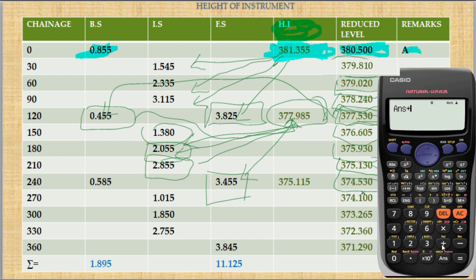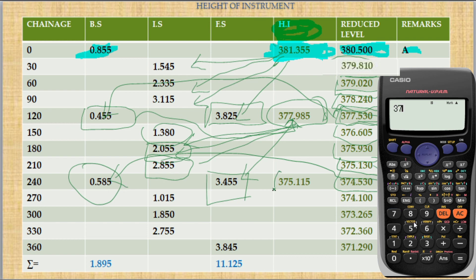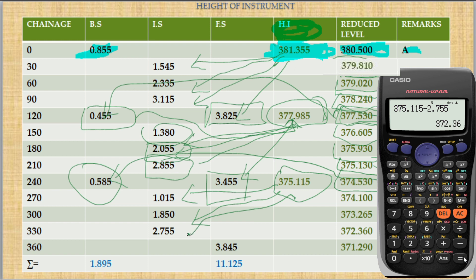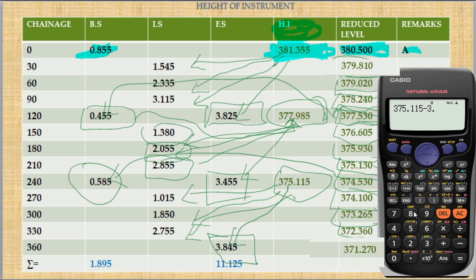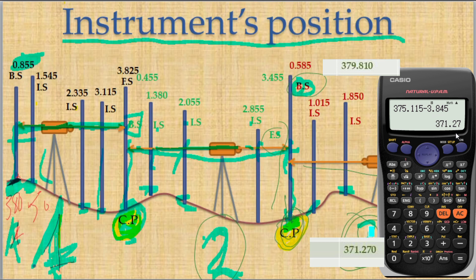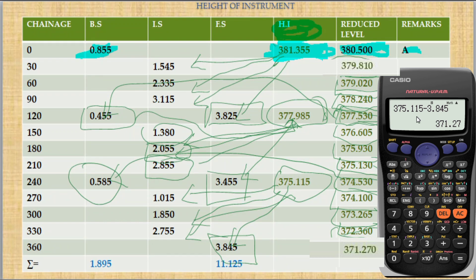After subtracting, you obtain the reduced level — for example 374.53 — which you then add to the first reading of position three (0.585) to get the height of instrument for that position. From position three's height of instrument, subtract the intermediate sights to obtain those reduced levels, then subtract the last reading to get the final reduced level at the end point B.